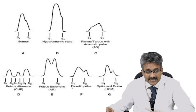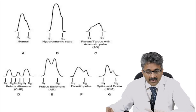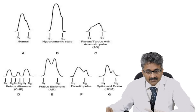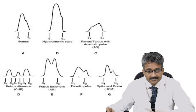The dicrotic pulse conditions are: sepsis, intra-aortic balloon counterpulsation, typhoid fever, dilated cardiomyopathy, left heart failure, and pericardial tamponade. In HOCM, there is a spike and dome pattern in the pulse.